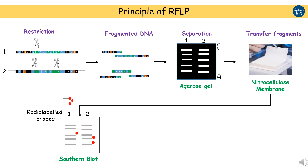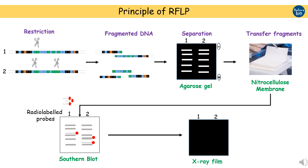At this stage, differential patterns of the fragments are still not visible. To visualize the different DNA fingerprint patterns between the individuals, X-ray film is applied to the blot and allowed to develop. The X-ray film shows the restriction fragment pattern of both individuals, and you can now clearly distinguish the two individuals based on their RFLP pattern.